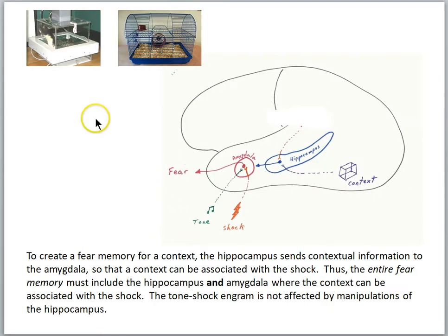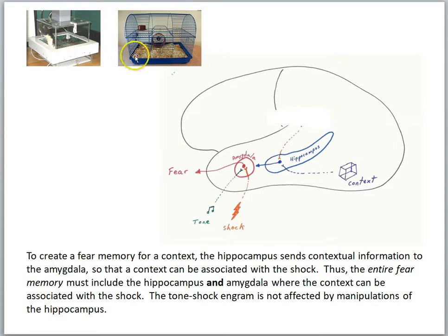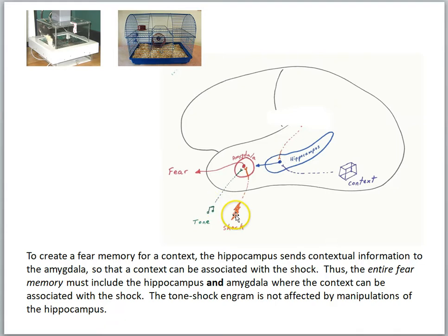In the case of this lesson, we'll be looking at contextual fear memory. This is the idea that when you place an animal in a certain context and give it a shock, it will show fear to that context at a later time. Fear memories are contextually sensitive, so if the animal never got shocked in one cage, it will not show fear in a different cage. We think the hippocampus is a critical structure for this contextual fear learning, whereas the amygdala is critical for associating a tone with a shock.